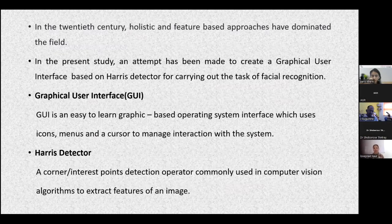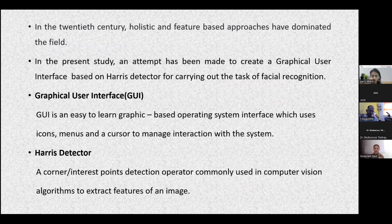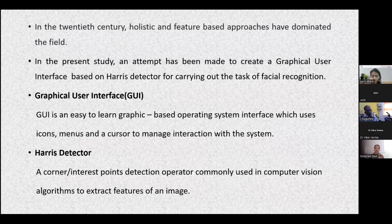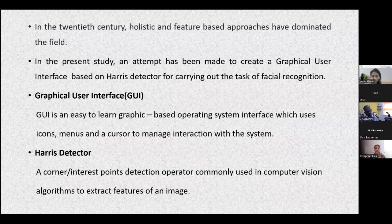In this present study, an attempt has been made to create a graphical user interface based on Harris Detector for carrying out the task of facial recognition. Graphical user interface, often abbreviated as GUI, is an easy-to-learn graphic-based operating system interface which uses icons, menus, and a cursor to manage interaction with the system — examples include Apple's iOS and social media apps such as WhatsApp, Instagram, and Facebook. Harris Detector, also called Harris Corner Detector, is an interest points detection operator commonly used in computer vision algorithms to extract the features of an image.